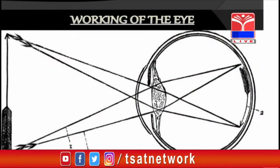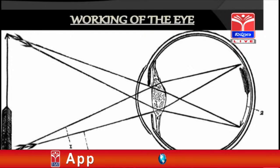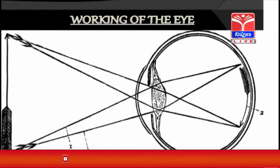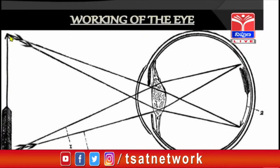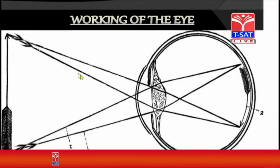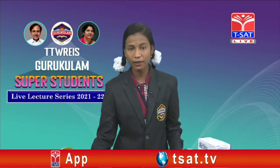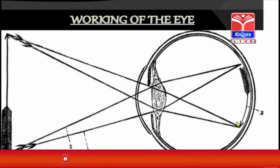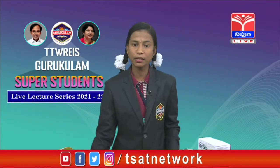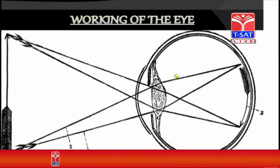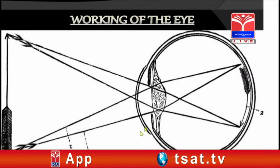Now let's look at the working of the eye. We can see an object — an arrow — with its top and bottom. Two incident rays coming from the top of the arrow pass through our eye lenses, are refracted, and form the image at the bottom of the retina. Similarly, two incident rays from the bottom of the arrow are refracted and form the image at the top of the retina. So we can observe that the image formed on the retina is inverted.